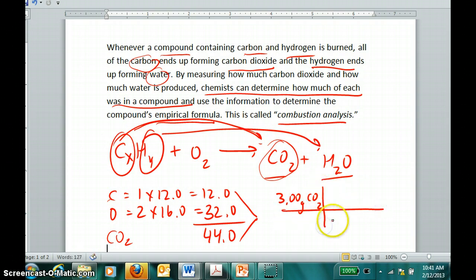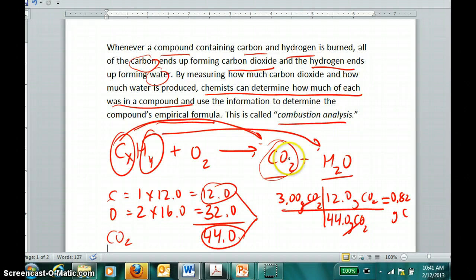Very simple conversion: there are 44 grams of CO2 for every 12 grams of carbon in the CO2, which comes out to 0.82 grams of carbon. So if I burned a hydrocarbon and got three grams of carbon dioxide, I know those 0.82 grams had to come from the carbon in my hydrocarbon.